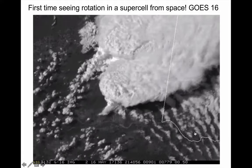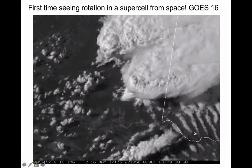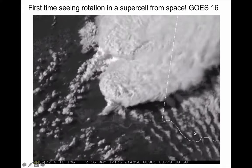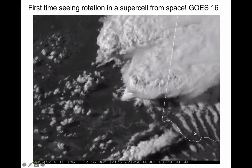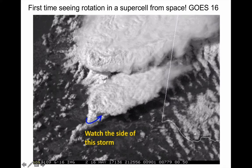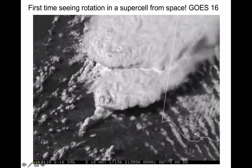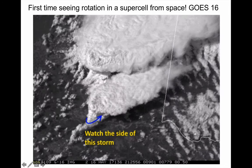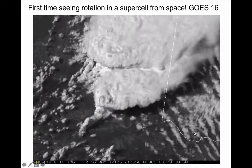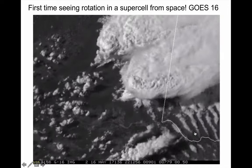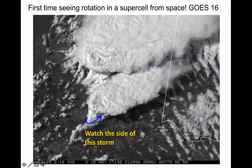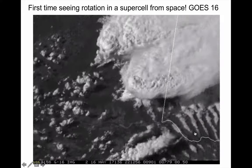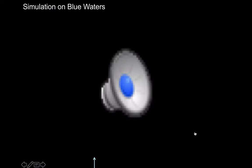Supercells rotate. In 2016, we launched GOES-16, our new geostationary satellite. Its incredibly high resolution in both time and space allows us to see rotation for the first time from outer space. When the satellite image was released, I watched the animation about a hundred times — we've never been able to see storms spinning from space. That's why supercells are single-celled storms: they rotate.